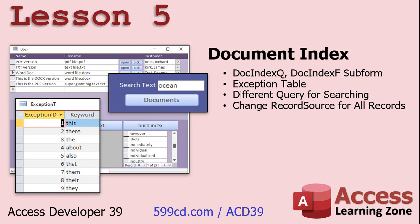In lesson five, we're going to set up our document index queue and document index subform, so you can click on a document and see whatever words are in that document below. We'll set up our exception table — a list of words you don't care to index, like 'that,' 'them,' 'there,' 'they,' 'about,' and so on. Then we'll make sure the search works taking the index table into consideration, which means we have to change the record source when toggling between searching and showing all documents. It's a little tricky — lots of good query content in lesson five.